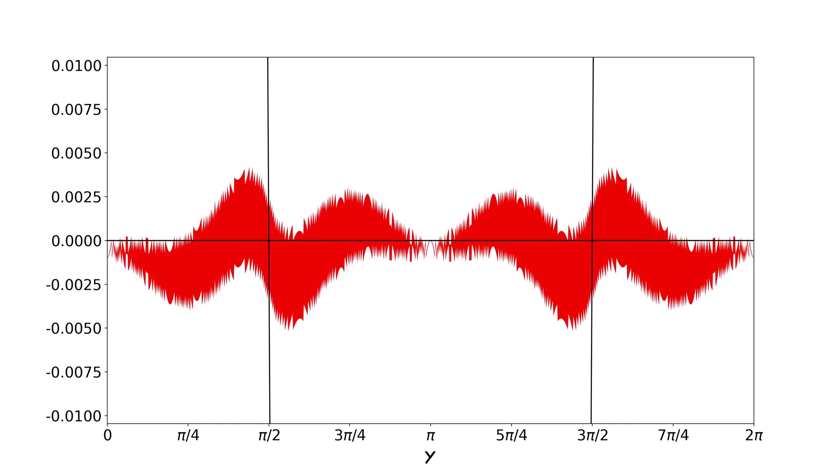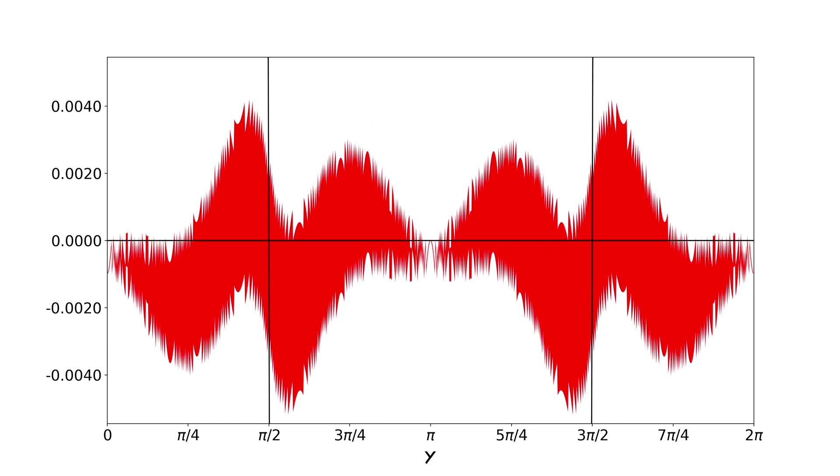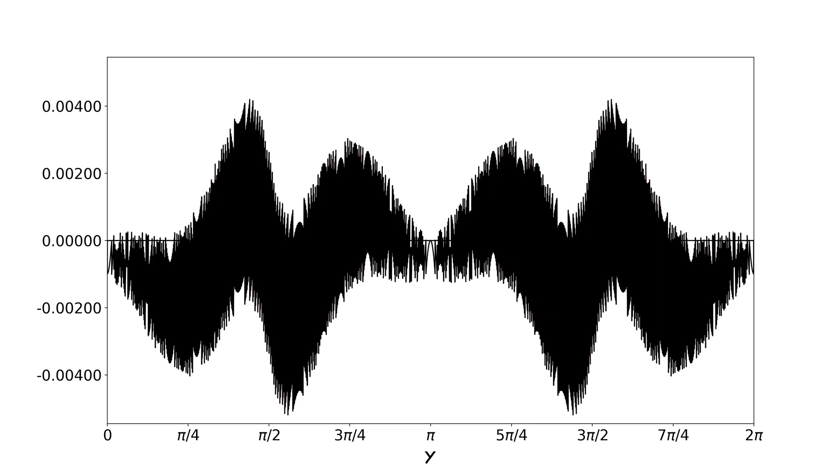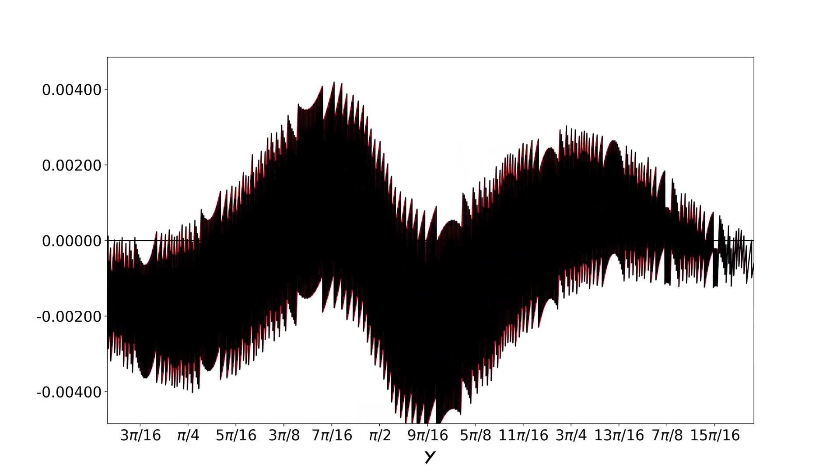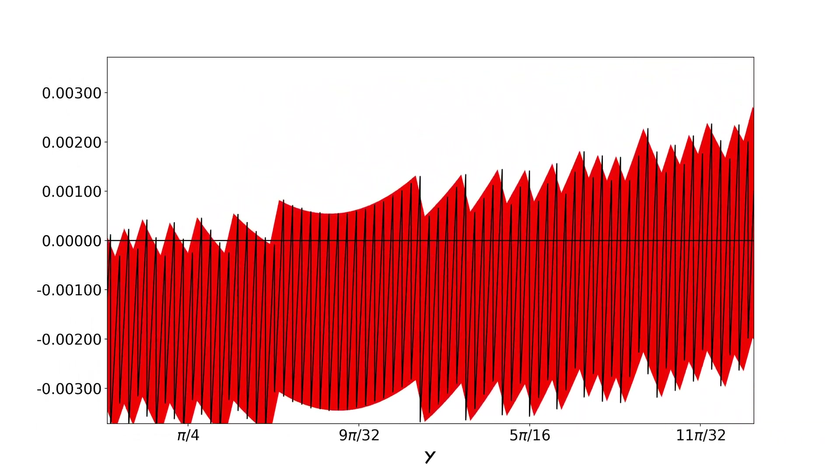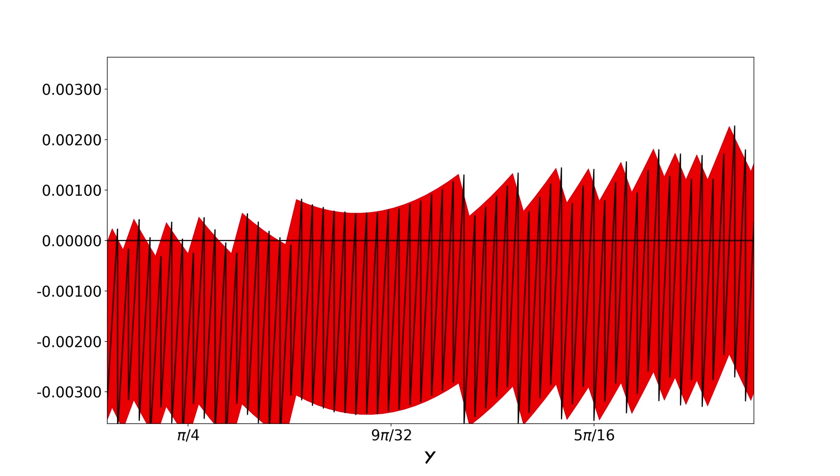The error goes up and down so fast that it wouldn't be very helpful to plot it outright at this scale. Instead I've colored the area that the error function goes through. It's probably clearer if I just show it. Here I'm drawing the full error function. It goes up and down constantly. So I've colored between the higher and lower points of the error function.